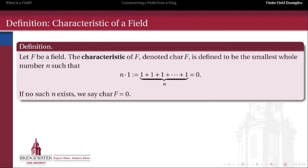This leads us to the first definition when working with a finite field: the characteristic. Because for a field to be finite, we have to put some limitation on the number of times we can add an element to itself before it goes away. The characteristic of a field is the smallest n such that when we add the unity element to itself n times, we get back to zero. For instance, in Z mod 4 or Z mod 9, the generator 1 added to itself 4 or 9 times gives 0. For the rationals or reals, we can add 1 infinitely many times and never reach 0, so those fields have characteristic 0.